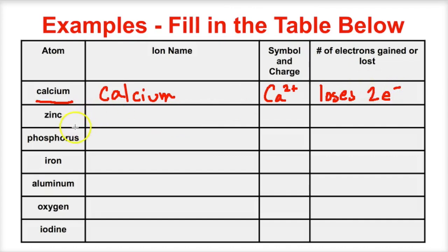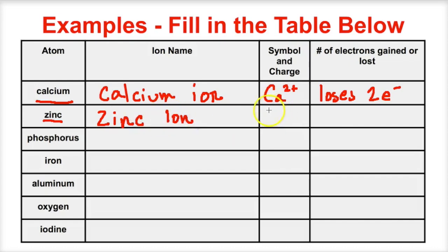Next is zinc. Zinc is a metal, so this is a zinc ion. The symbol is Zn, and zinc has a tendency to lose two electrons, so it forms Zn²⁺ ions. The plus-two means it loses two electrons.